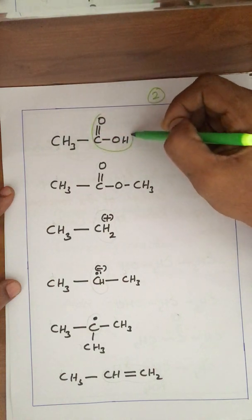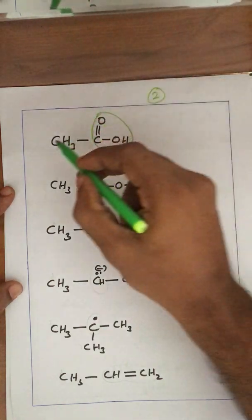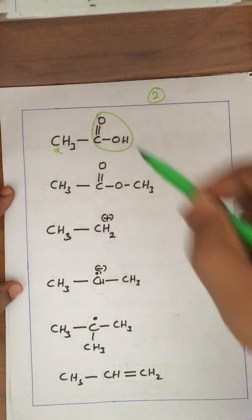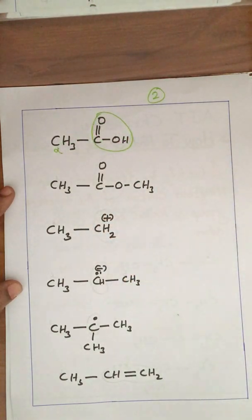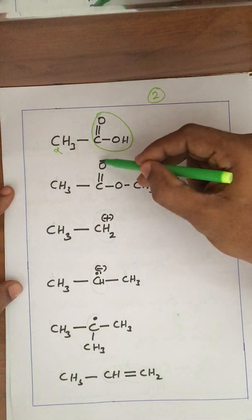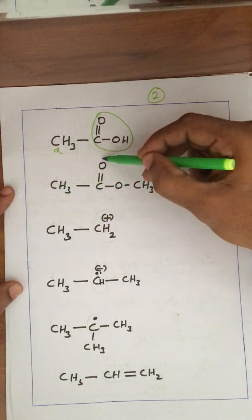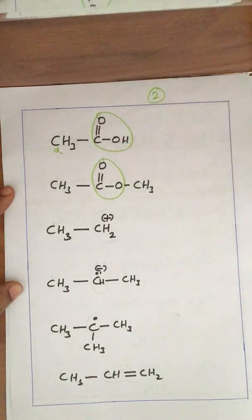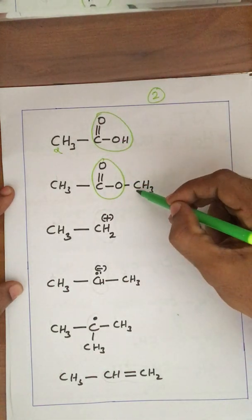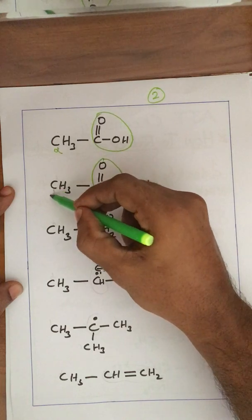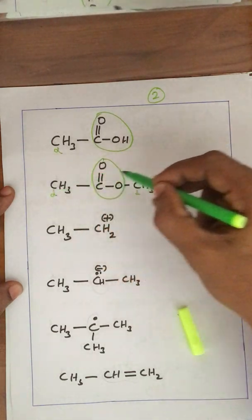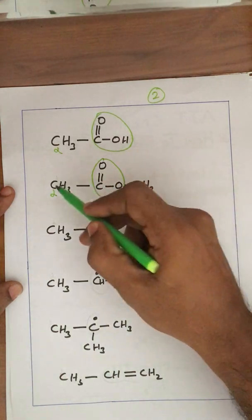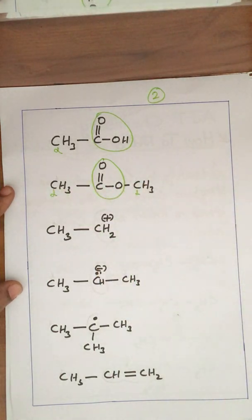In the carboxylic acid, the carbon attached to the COOH group is the alpha carbon atom. For an ester, the ester group as a whole is taken as the important group, and therefore the carbon atoms attached to it are taken as alpha carbon atoms. Remember that these carbon atoms attached to the ester group are the alpha carbon atoms.